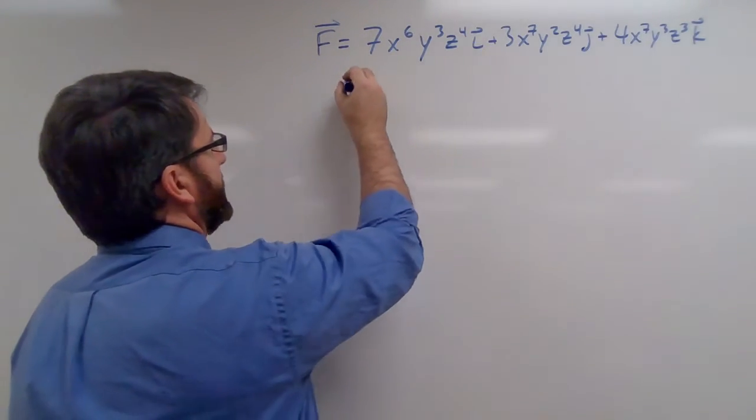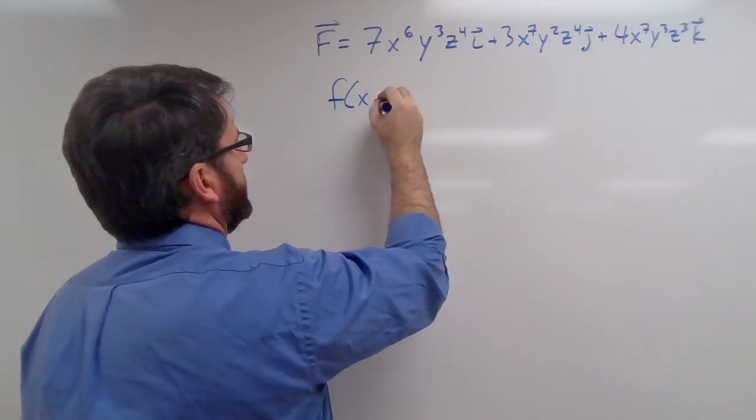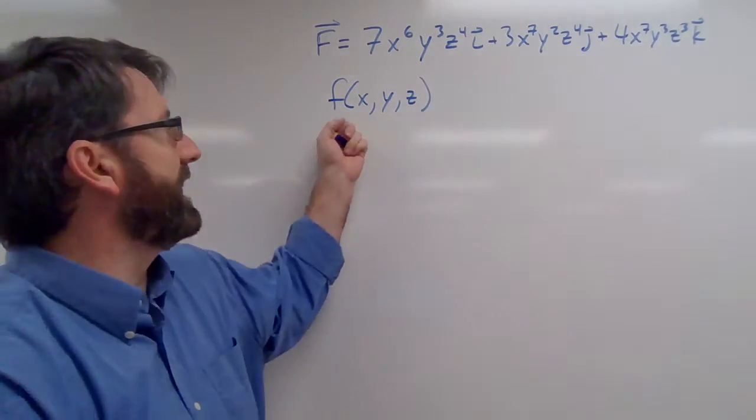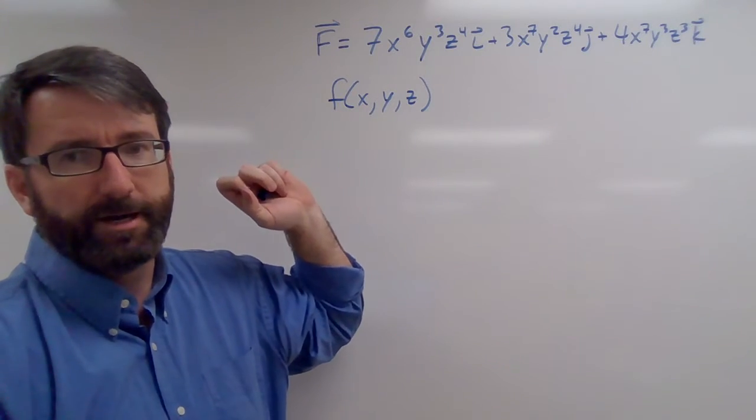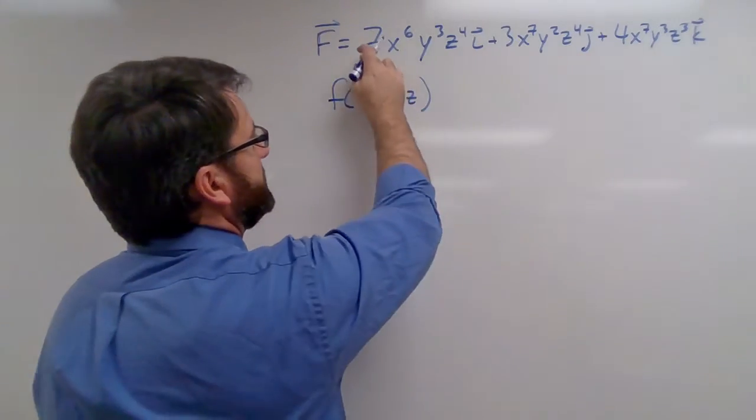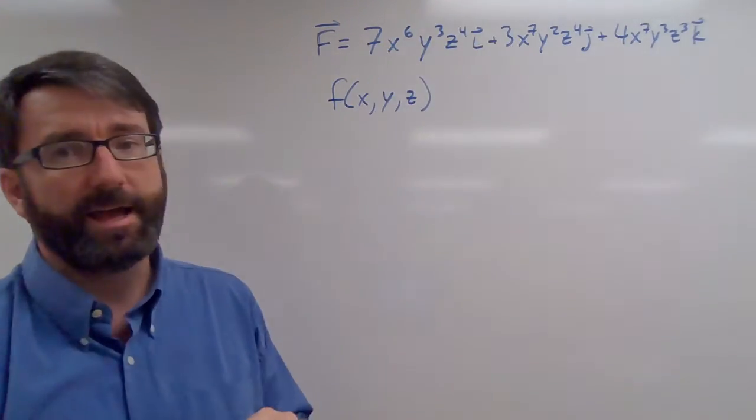Our potential function is going to be some function f so that the partial derivative of f with respect to x is going to be this here in front of the i.